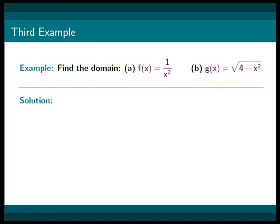In this example, we are asked to find the domain of different functions. Our first function is f(x) equals 1 over x squared. And our second function is g(x) equals square root of 4 minus x squared.